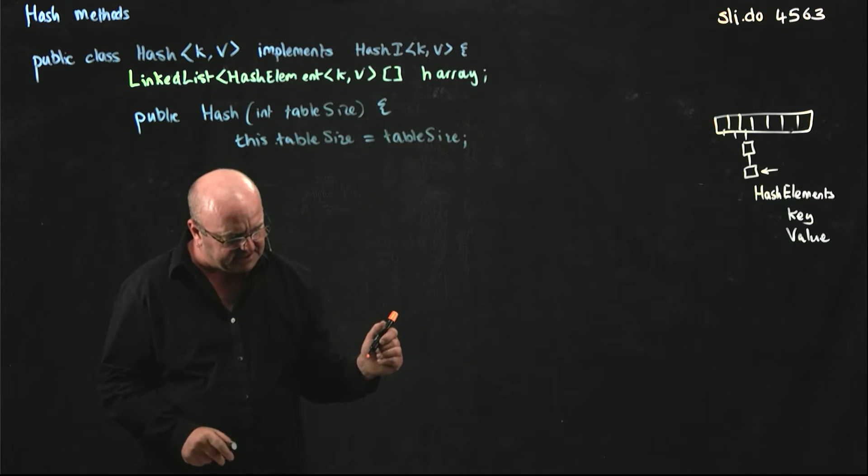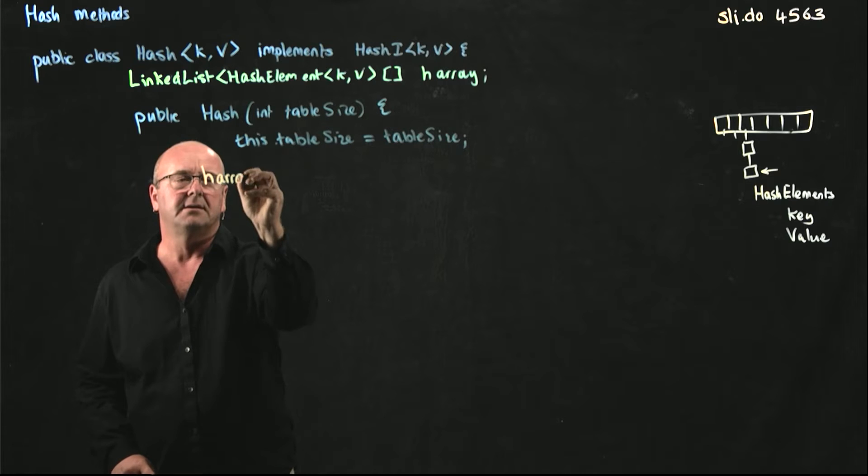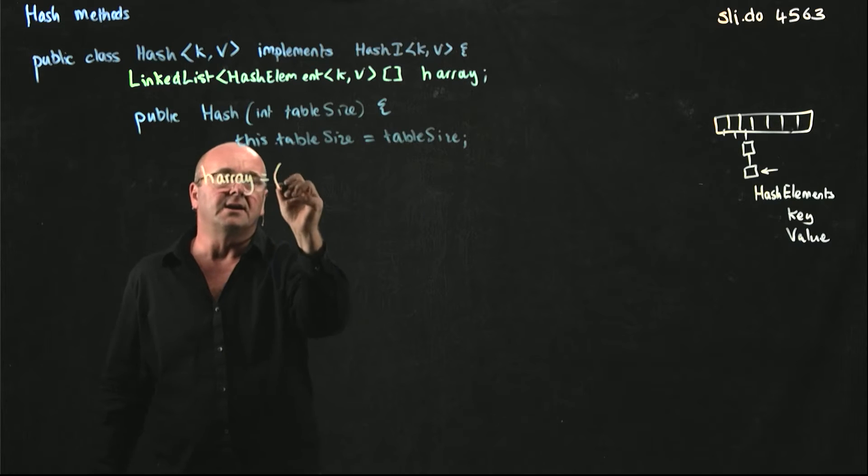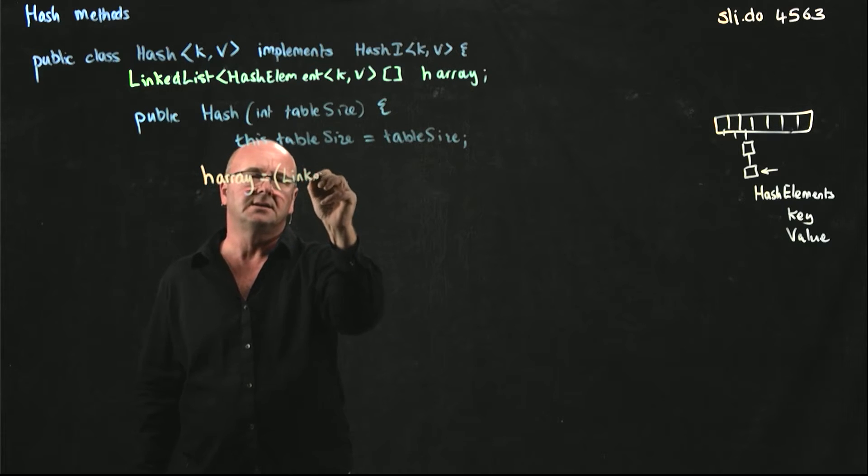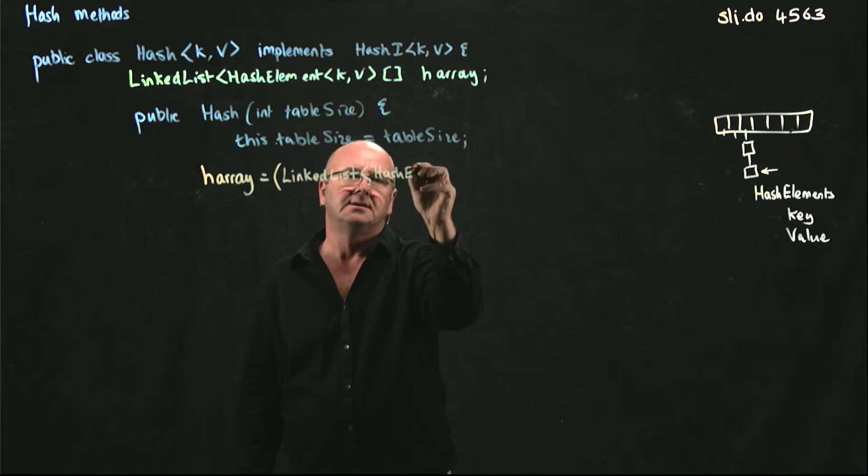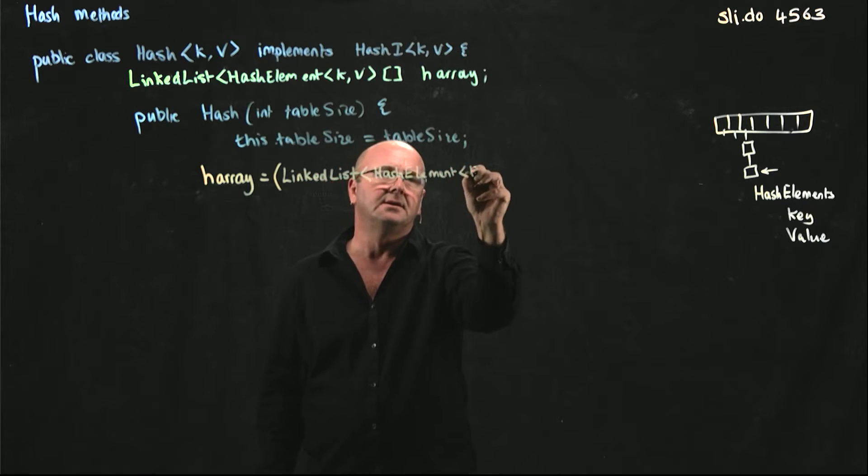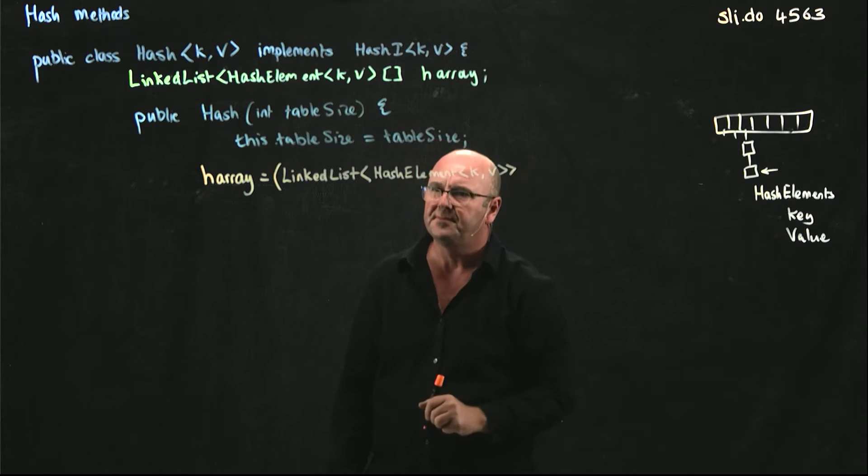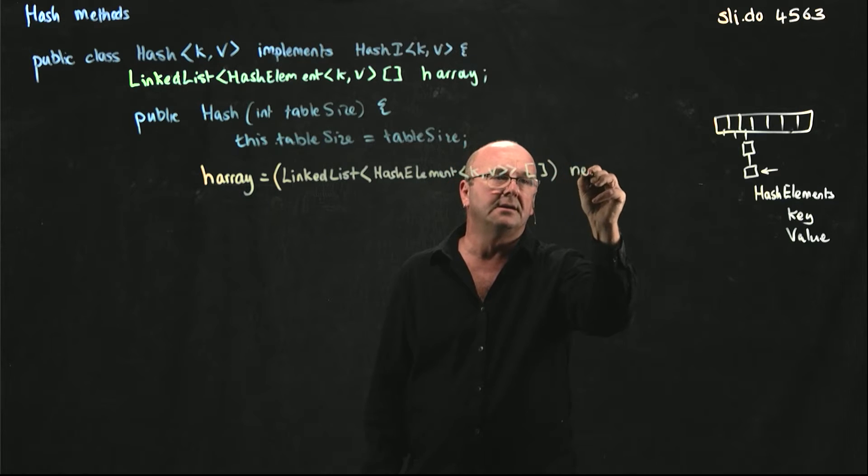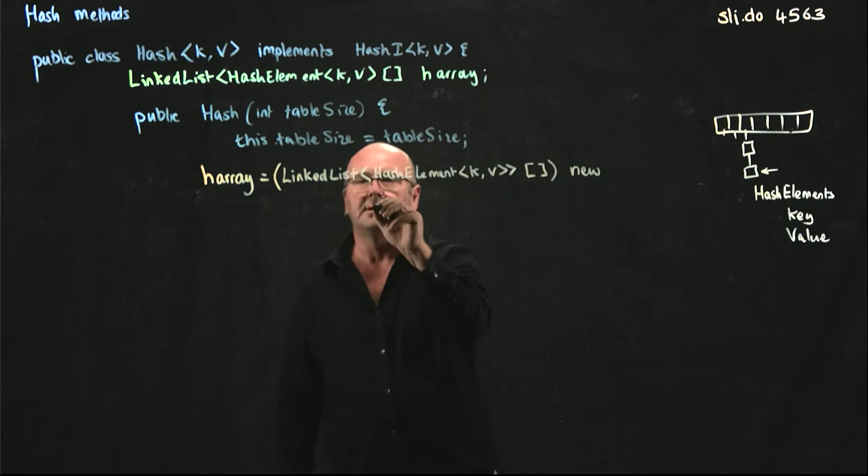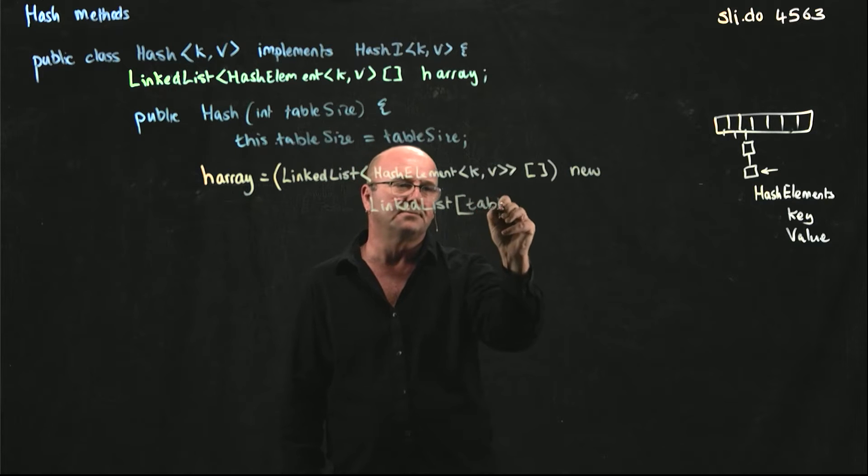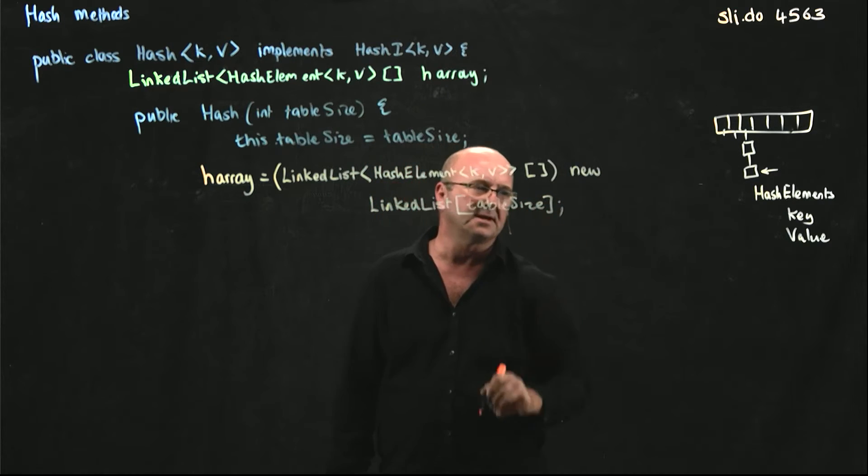And so the way that we do this is that we say, here's our harray, our variable from up there. And we're going to cast it as a linked list hash element KV array. And it's a new linked list array of table size. That's all one line.